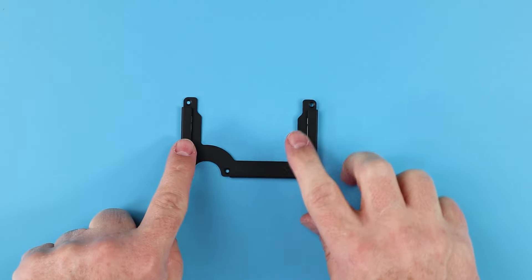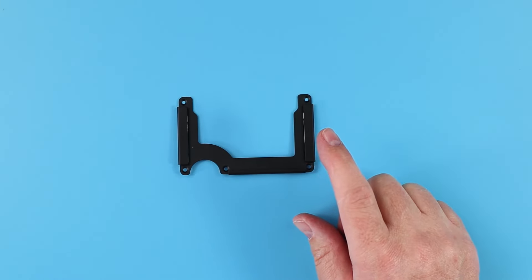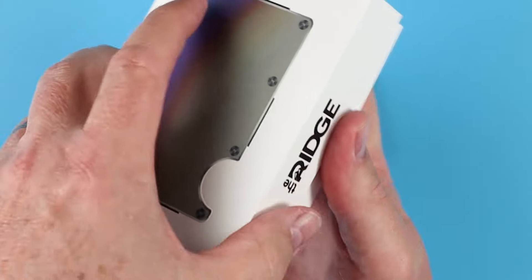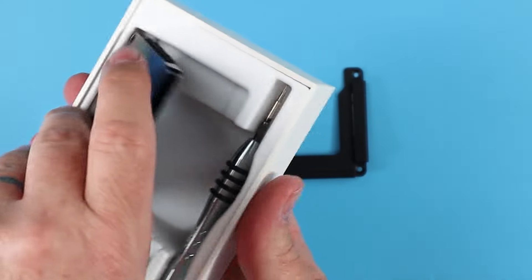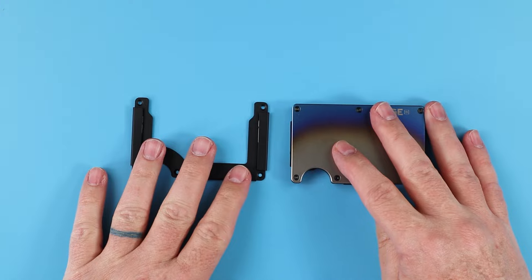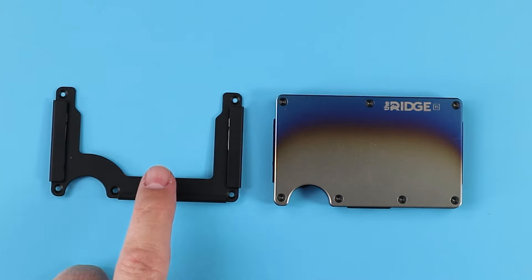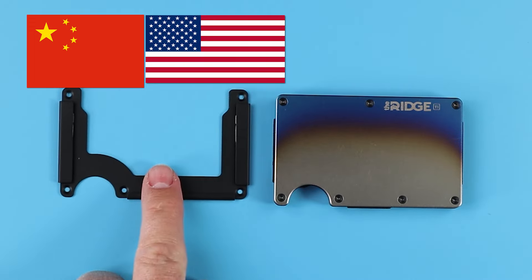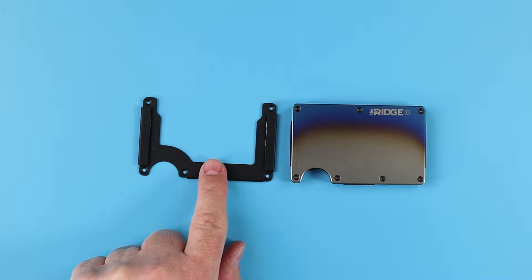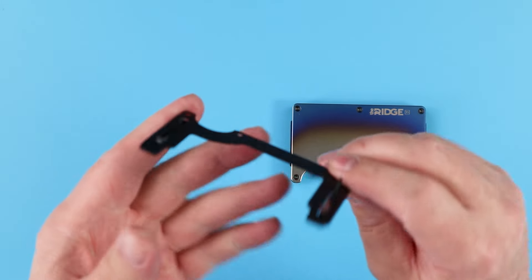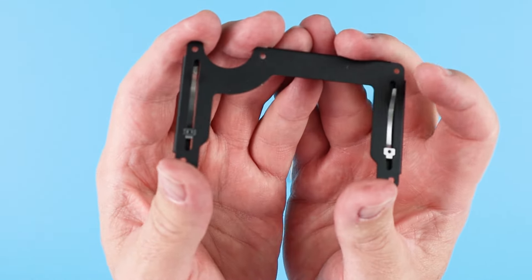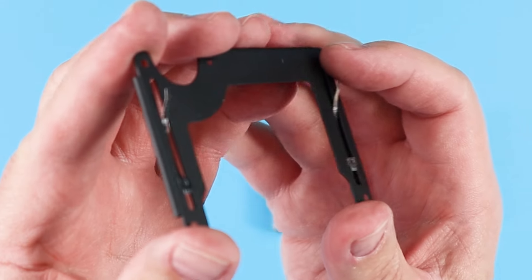As we get this ready to attach to a wallet, the wallet that we have chosen today is this lovely burnt titanium, which we will pull out and make available to us right here. This is made in China, designed in the United States, and it is made from 6061 aluminum with these springs on the back right here, which are stainless steel.